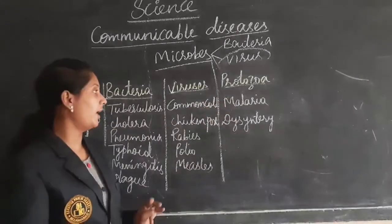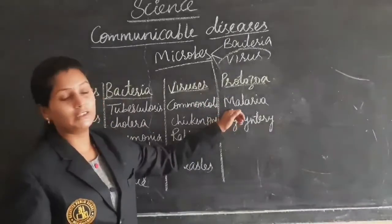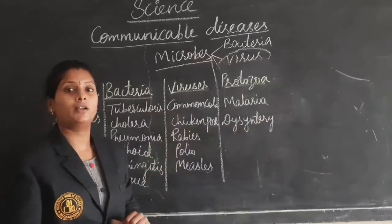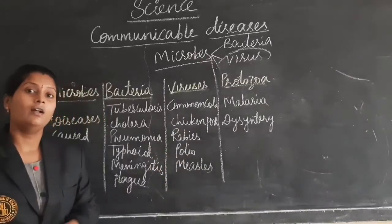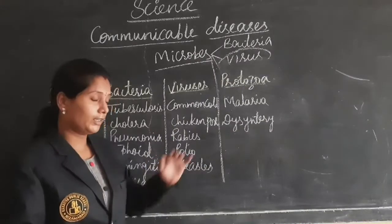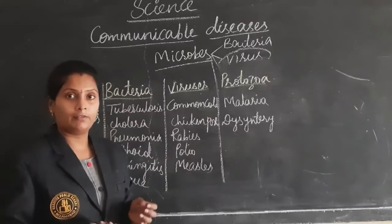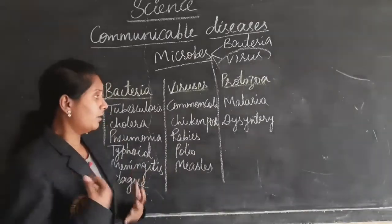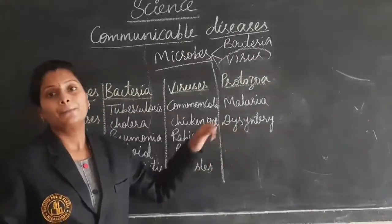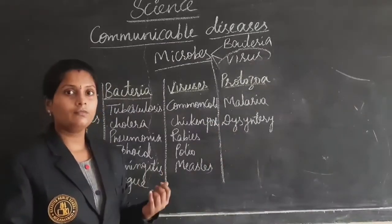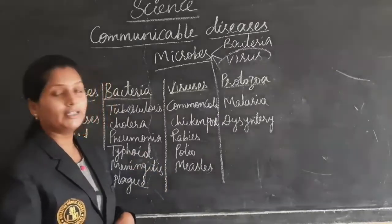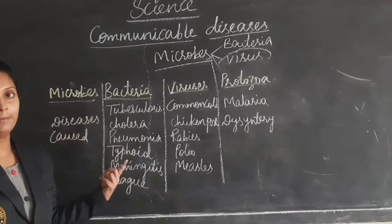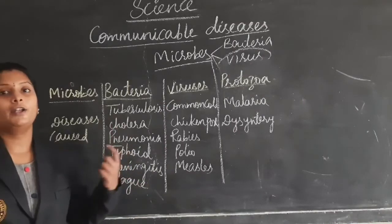Next, coming to protozoa, another microbe which is causing diseases like malaria and dysentery. Malaria is nothing but a fever — the symptoms of a person suffering with malaria are shivering and cold, like fever with shivering. And dysentery involves digestive problems. This is about the microbes and diseases spread by different types of microbes.